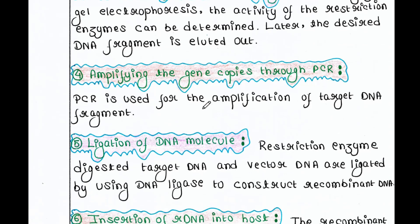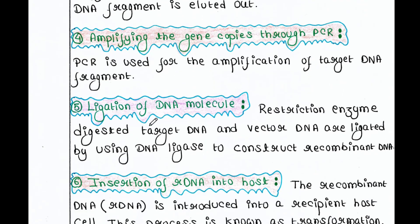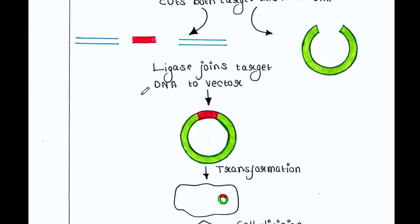The next step is to amplify your gene copies through polymerase chain reaction. After that, the next step is ligation of the DNA molecule. Now you have your gene of interest in ample amount and you have your vector DNA, so just use a ligation enzyme to join this gene of interest into the vector DNA. The ligation enzyme is just like a glue — it will help your gene of interest join to this vector.